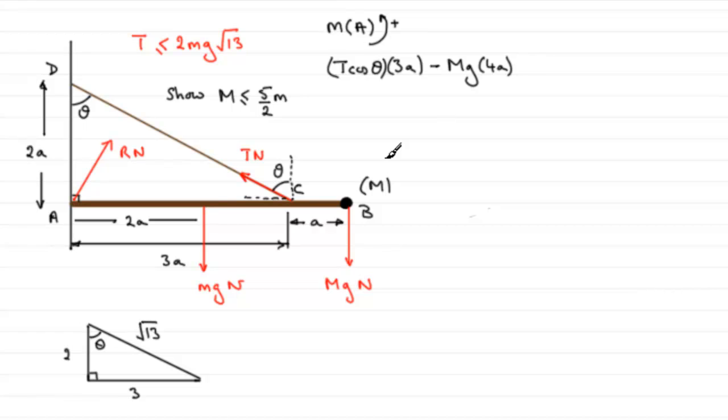And then minus the moment of the weight of the rod, so that's going to be mg times 2A. And it'll be minus, because it's in the opposite sense to what we've got here, minus mg times 2A.